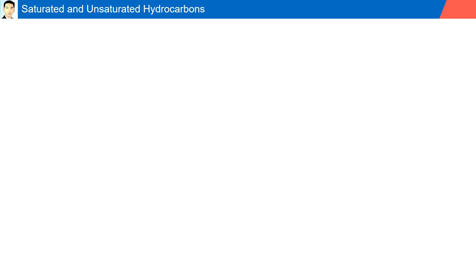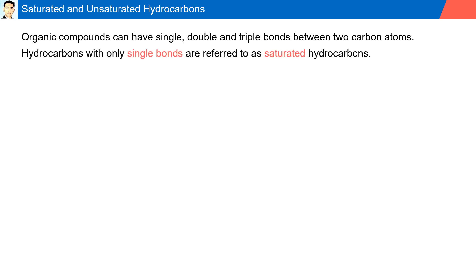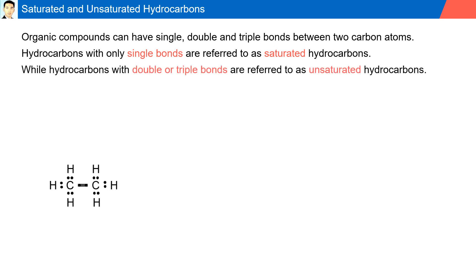Saturated and unsaturated hydrocarbons. Organic compounds can have single, double, and triple bonds between two carbon atoms. Hydrocarbons with only single bonds are referred to as saturated hydrocarbons, while hydrocarbons with double or triple bonds are referred to as unsaturated hydrocarbons.